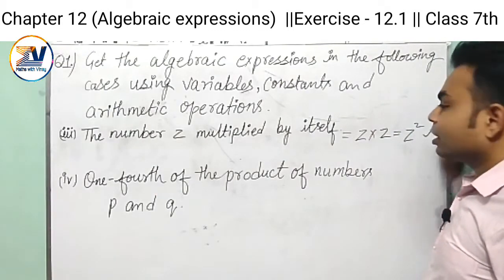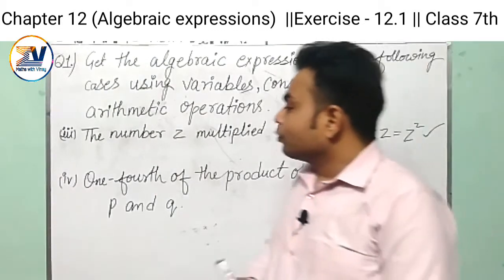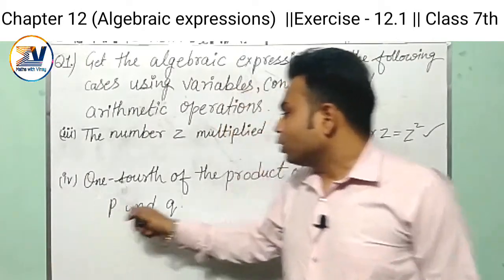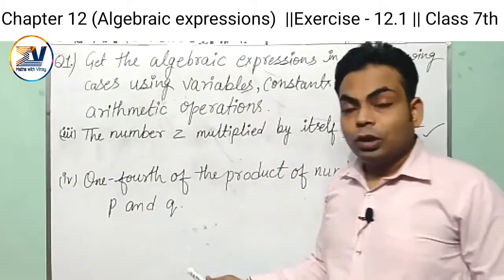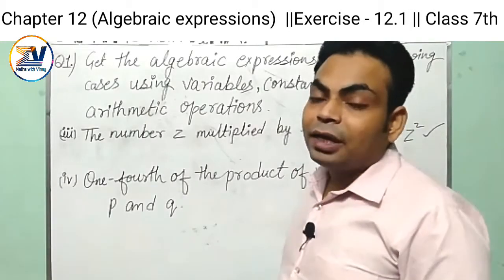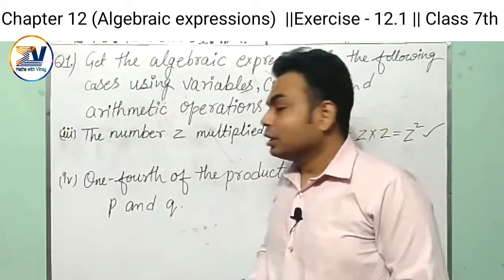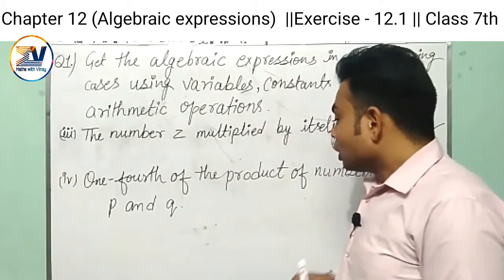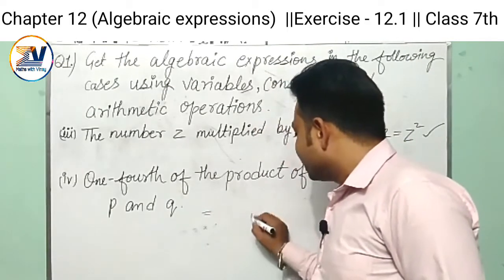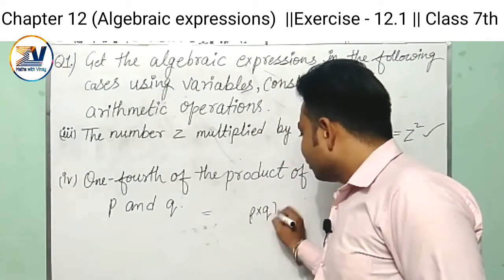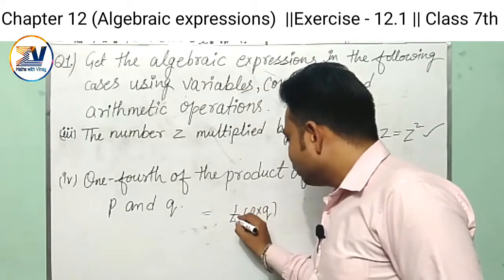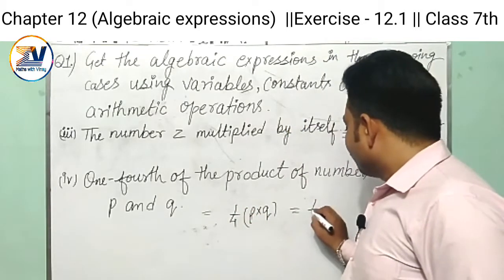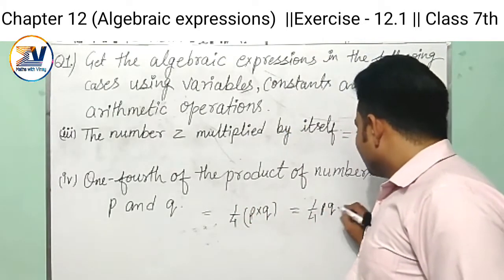This is our expression. Now we go to the fourth one, the fourth part: one-fourth of the product of numbers p and q. In this statement we need to take one-fourth of p and q. So firstly we find the product of p and q, p into q, we get one-fourth, that means one upon four p q. This is our expression.